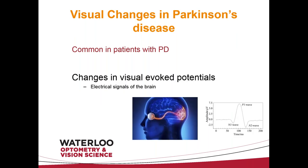There are also changes in the visual evoked potential. The signal from the eye travels down the optic nerve through other pathways to the visual cortex, where the brain processes vision. We can measure electrical signals from this brain area — like measuring brain waves — by placing electrodes on the skull. We send a flash of light or a checkerboard pattern as a stimulus and measure the output waveforms. Again, in Parkinson's disease these have been found to be reduced.